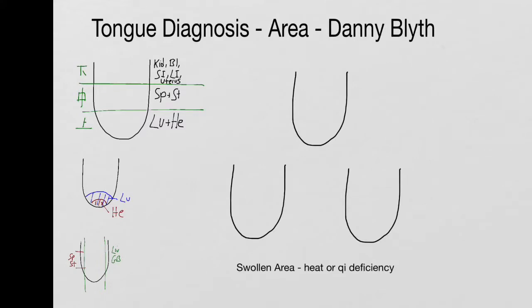So if the whole tongue is swollen, that's damp or phlegm. And if the edges, the sides are swollen, there's three possibilities. One is that the whole edges are swollen. You get a tongue that looks rather like that in profile. And that's spleen and stomach, usually spleen chi deficiency.